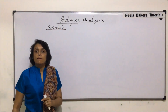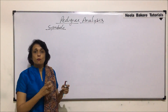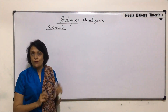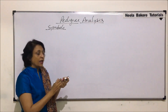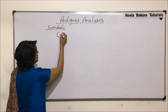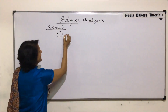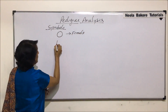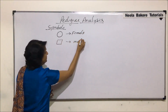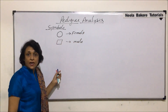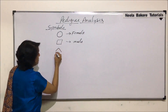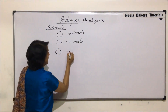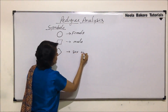When we study pedigree in case of human beings or a family, we don't start with the name of the person. We use symbols for representing various kinds of things. A circle represents a female. A square represents a male. And sometimes a diamond shape is drawn, which indicates that the sex of the individual is not specified.